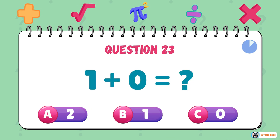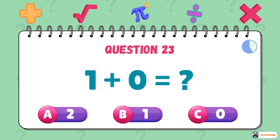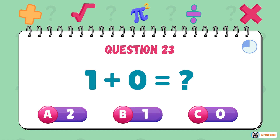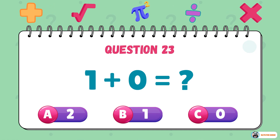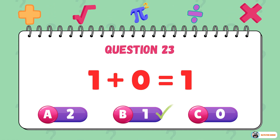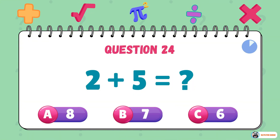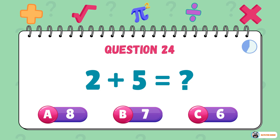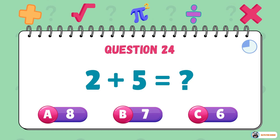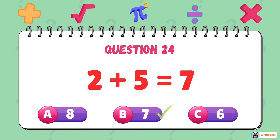What is 1 plus 0? The answer is 1. What is 2 plus 5? The answer is 7.